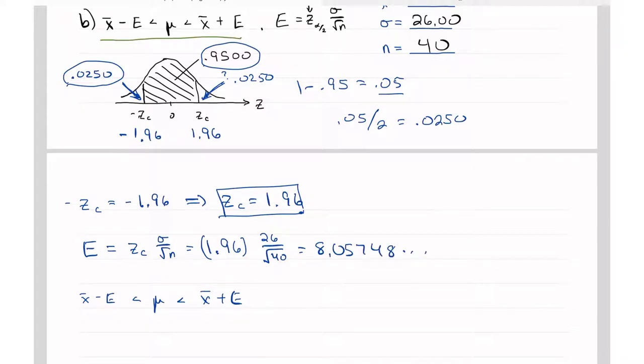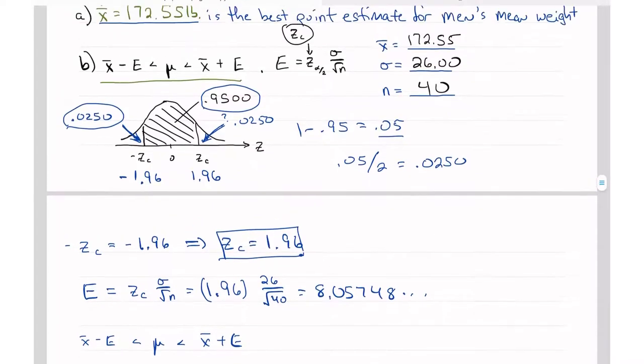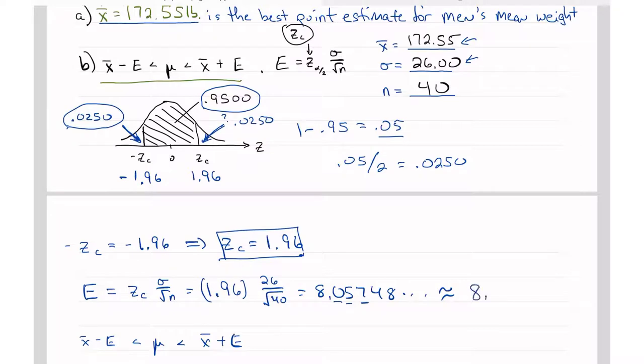So that was 26 over the square root of 40, and that gave me 8.05748. And since I have two decimal places for both x̄ and σ, I'm going to round this to two decimal places. So 8.06 pounds. So this is E.